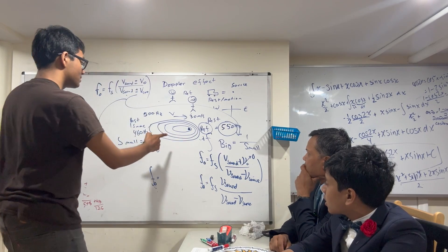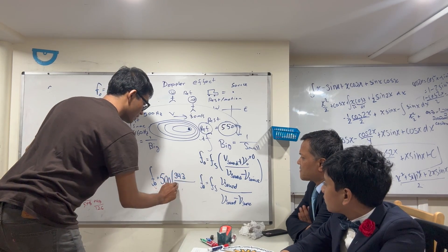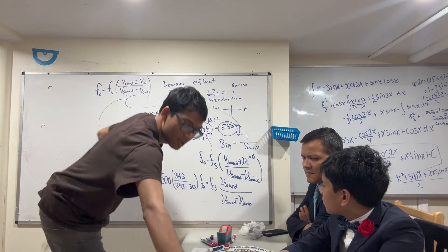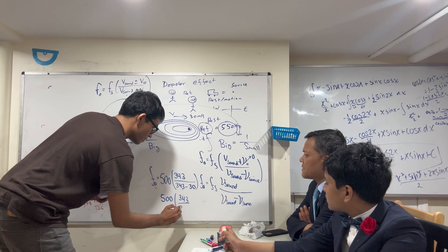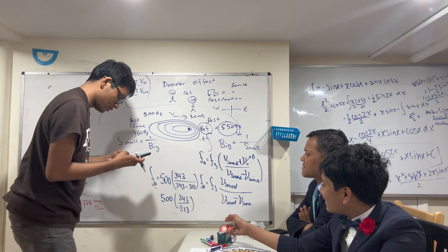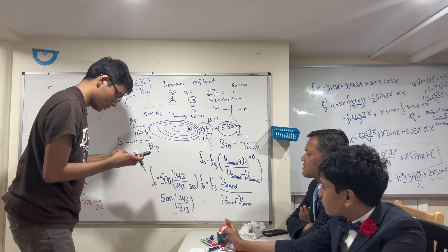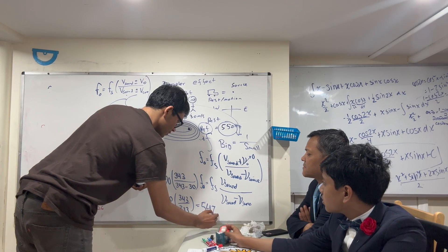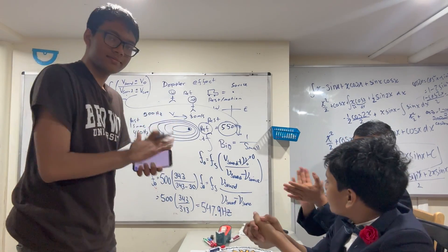The frequency of the source is 500 Hz, times the velocity of sound 343, divided by 343 minus the velocity of the car which is 30. So that's 500 × 343 / 313. The result is approximately 547.9 Hz — just a little bit bigger than 500, close to the predicted 550 Hz.